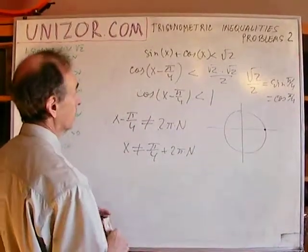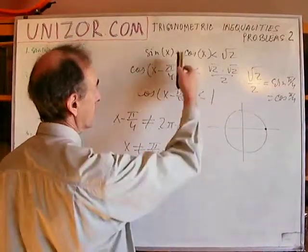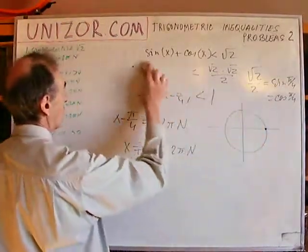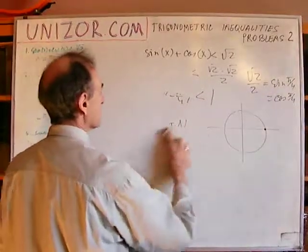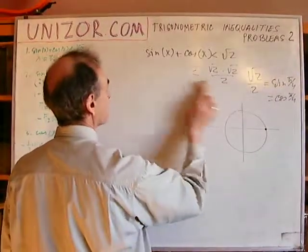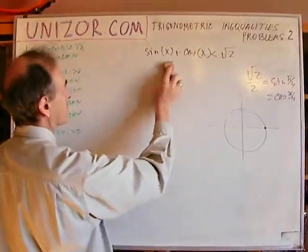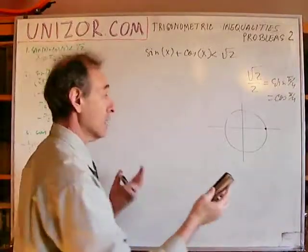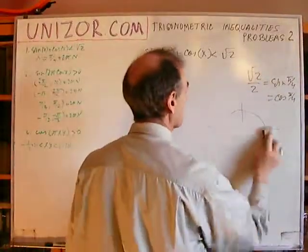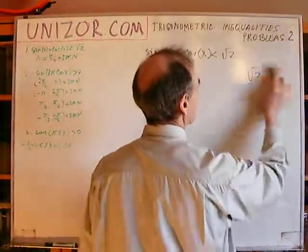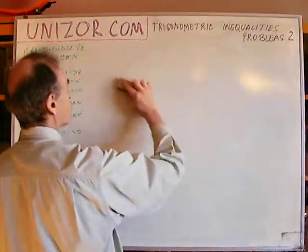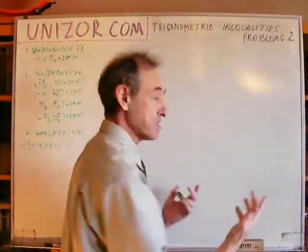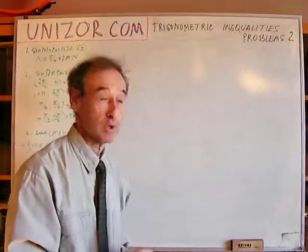The trick is to multiply both parts by this expression. If you have sine and cosine in this particular combination, it might actually be helpful to multiply it by square root of 2 over 2, which gives you a simpler formula.